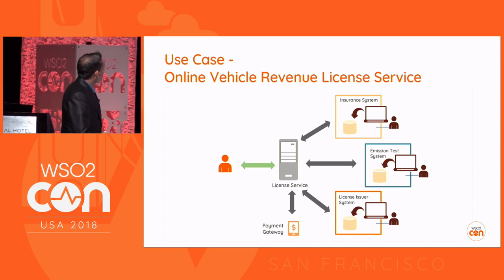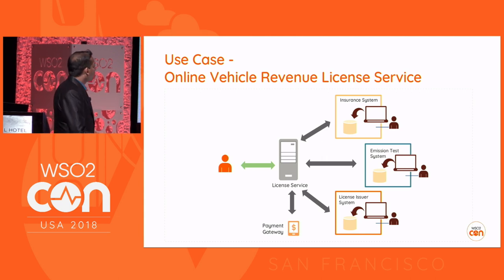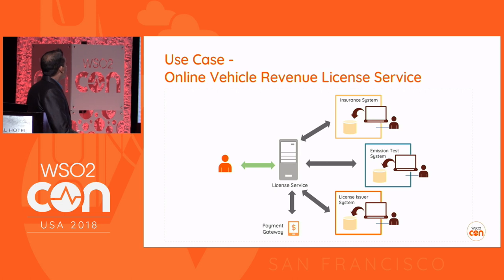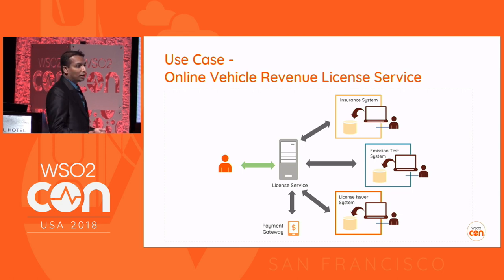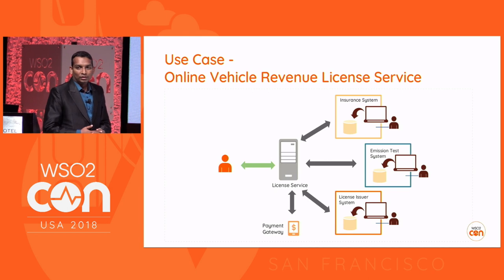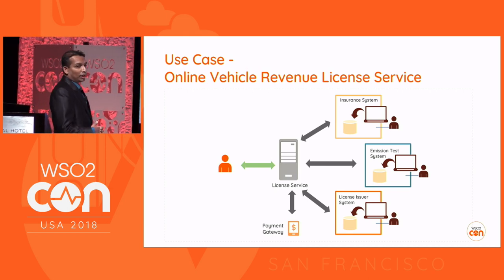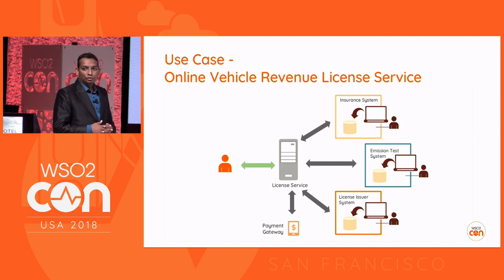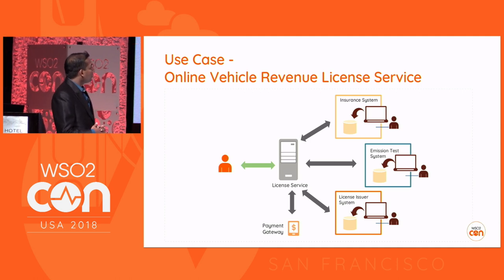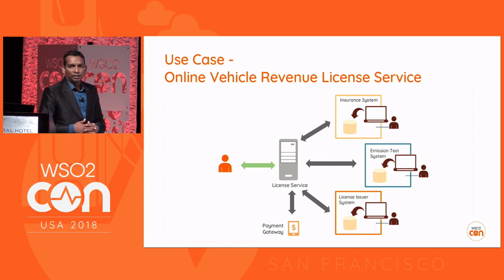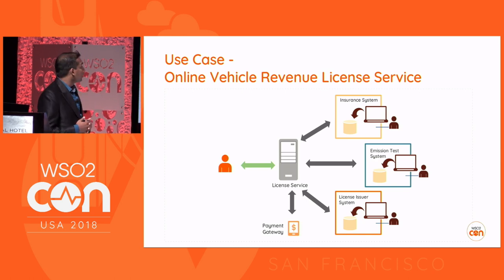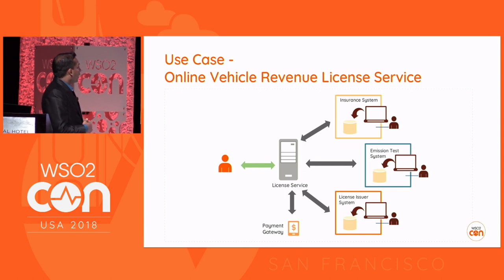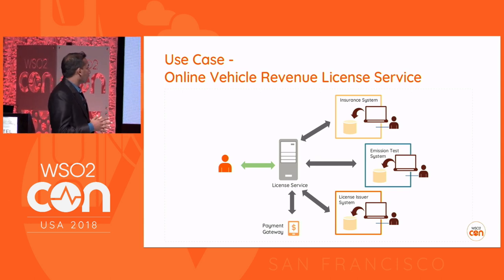Let me explain the use case we are building today. This is actually a real world use case about an online vehicle revenue license system. In some countries like Sri Lanka, we need to obtain a revenue license to drive a motor vehicle on roads. To obtain a revenue license, the vehicle needs to have a valid insurance certificate and also a valid emission test certificate — meaning the vehicle has to be tested and verified as eco-friendly.